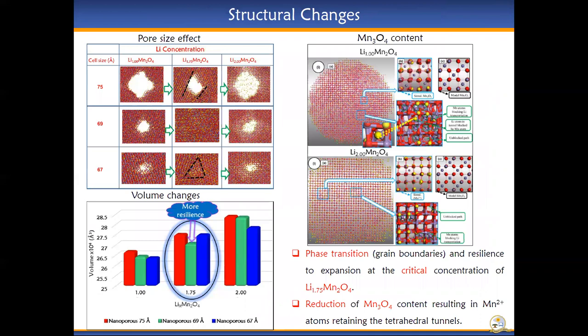The structural changes observed on the materials after the amorphization and recrystallization processes include the pore size effect, where increasing the lithium concentration from the pristine spinel to Li 1.75 resulted in the pore reducing in size for nanoporous 75 with grain boundaries, whereas for nanoporous 69 and 67, the pores completely closed up. However, all the structures regained their original pore size upon full lithiation at Li 2.00 Mn2-O4 concentration.